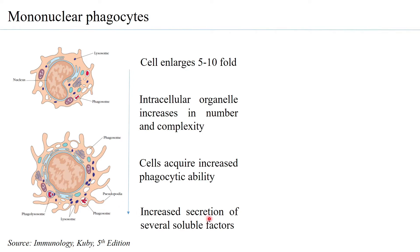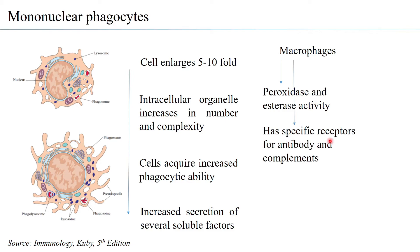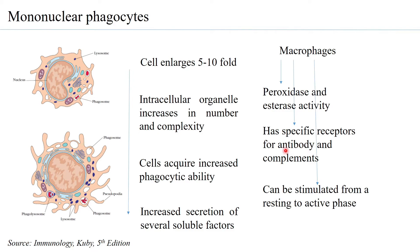In response, there is increased secretion of several soluble factors. Macrophages have peroxidase and esterase activity, which helps in the immune response. They have specific receptors for antibodies and the complement system — molecules of the immune system that eliminate pathogens — and these receptors allow them to carry out antibody-dependent cytotoxicity. Macrophages can be stimulated from a resting to an active phase and give rise to varied secretions.